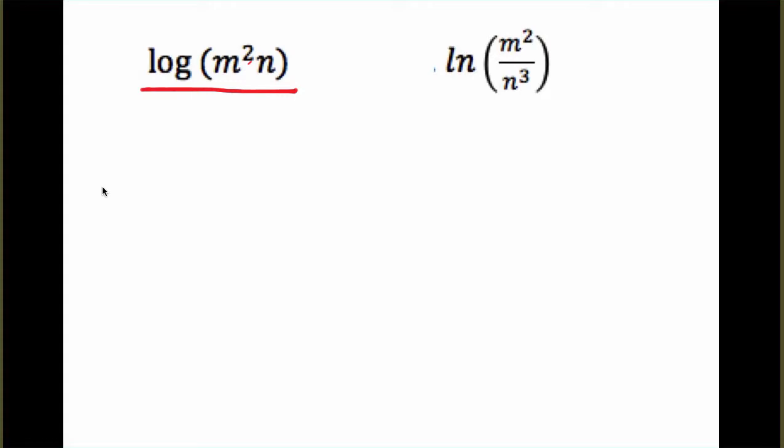So right here, we have m squared times n. If you look at your properties, to separate multiplication, we can use addition. So this becomes log of m squared plus log of n.